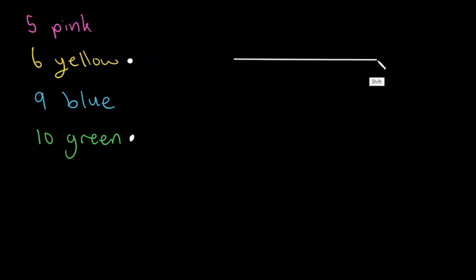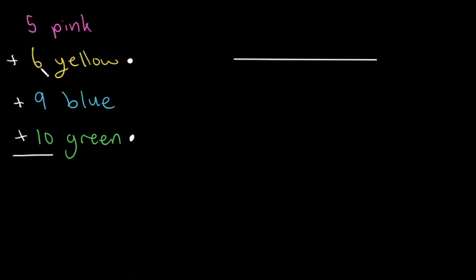So going back to our formula, let's start with all possible outcomes. How many possible outcomes are there? Well, it could be any marble in the bag that you drew out, so all possible outcomes would be the total number of marbles. So what is 5 plus 6 plus 9 plus 10? Well, 10 plus 9 is 19, 5 plus 6 is 11, and 11 plus 19 is 30. So there is a total of 30 marbles and 30 possible outcomes.